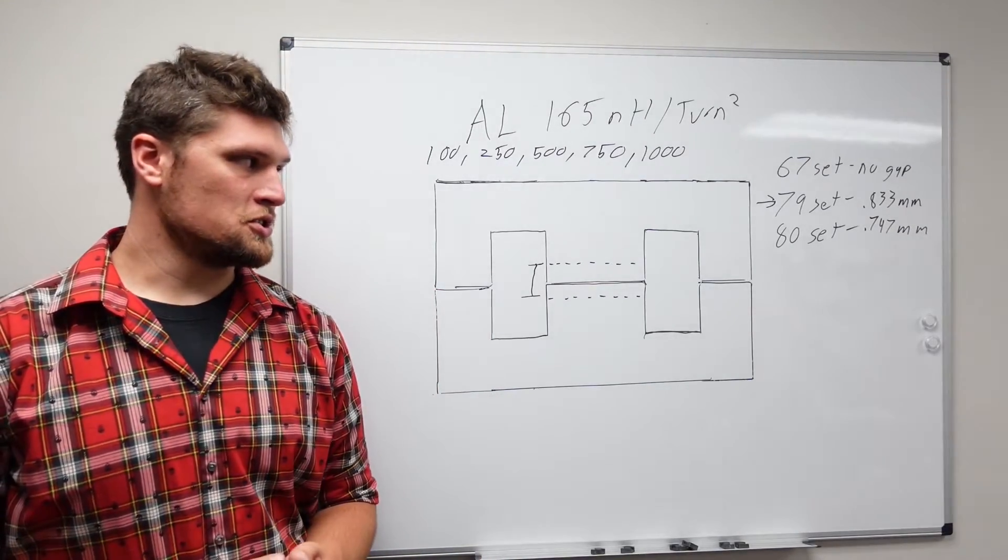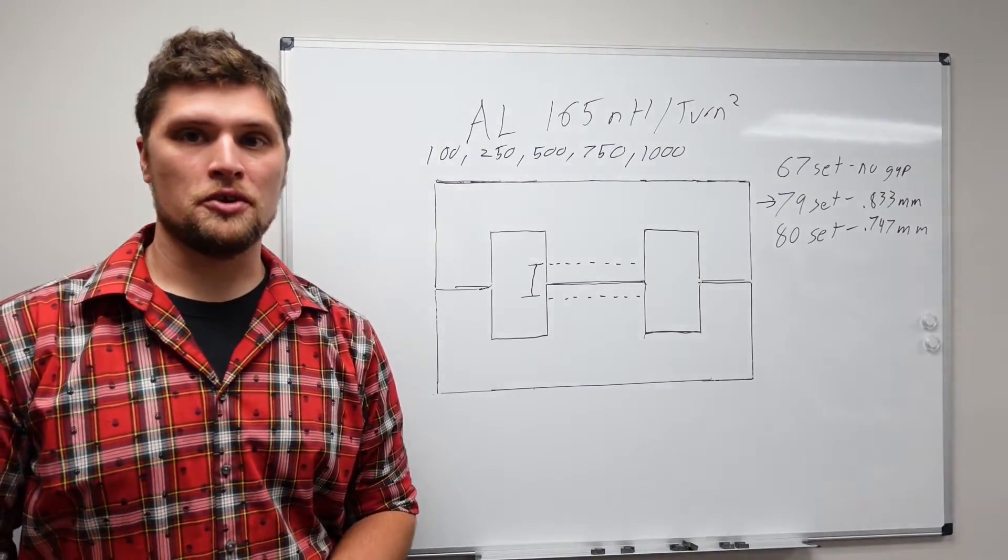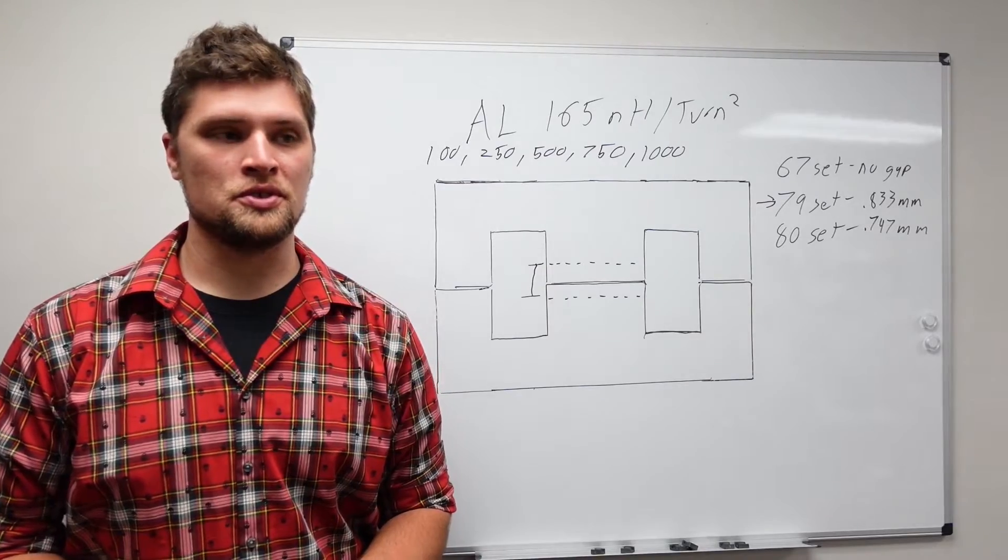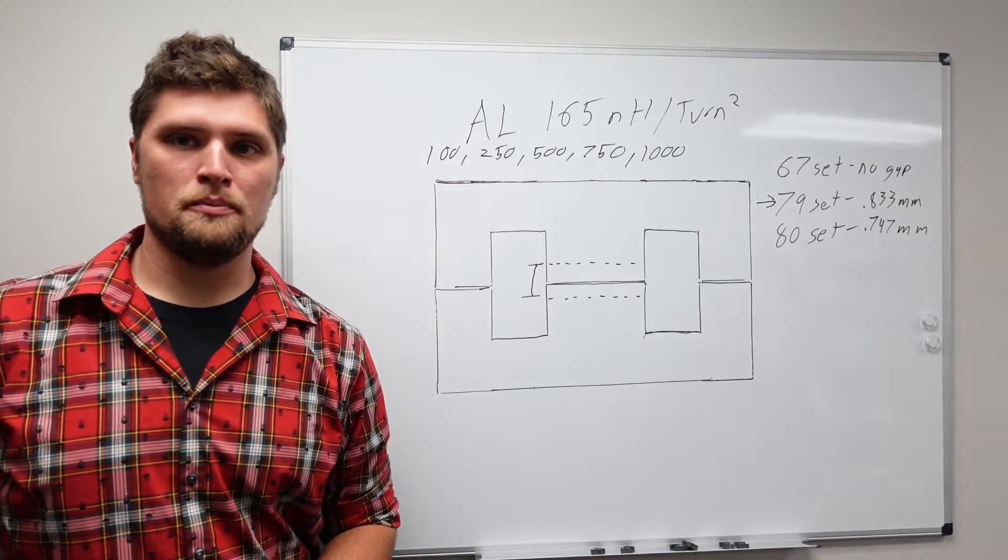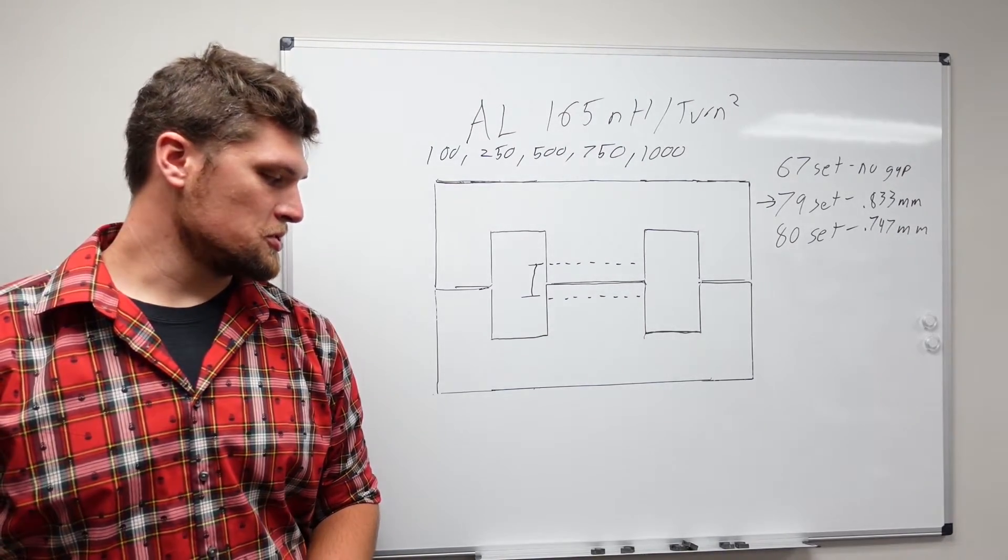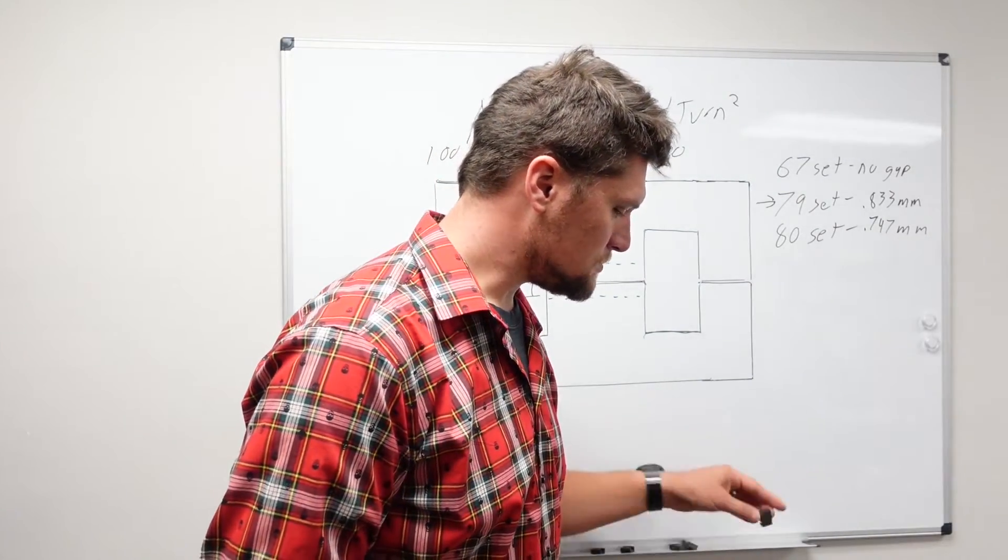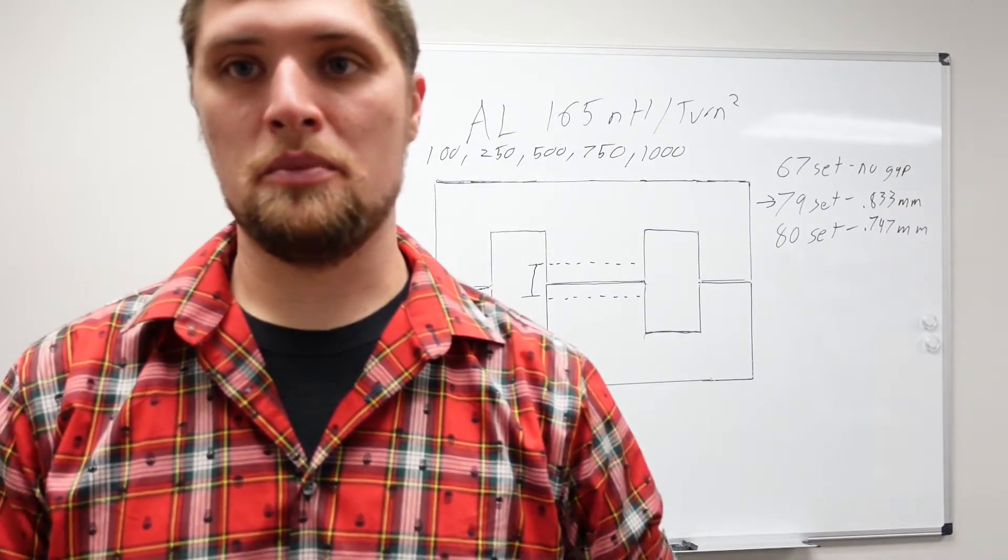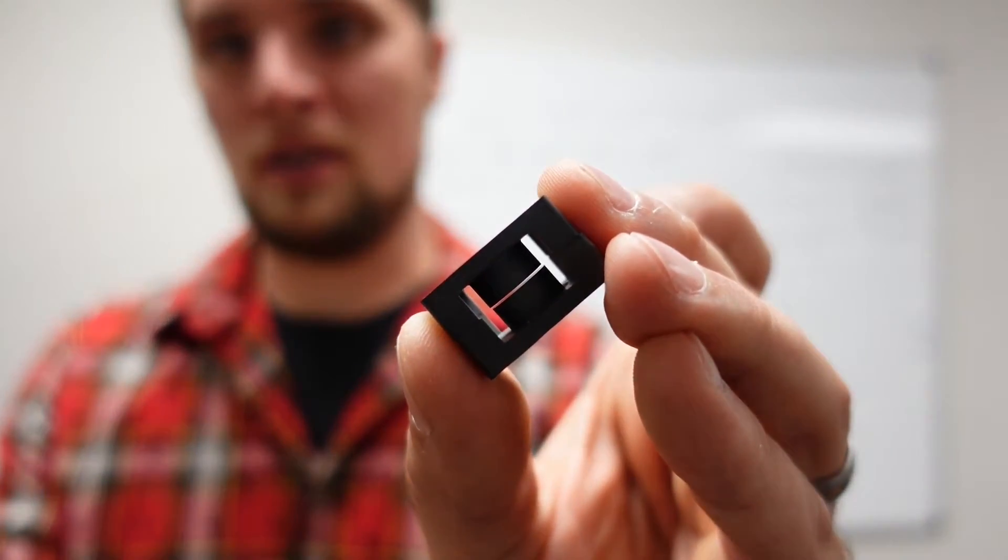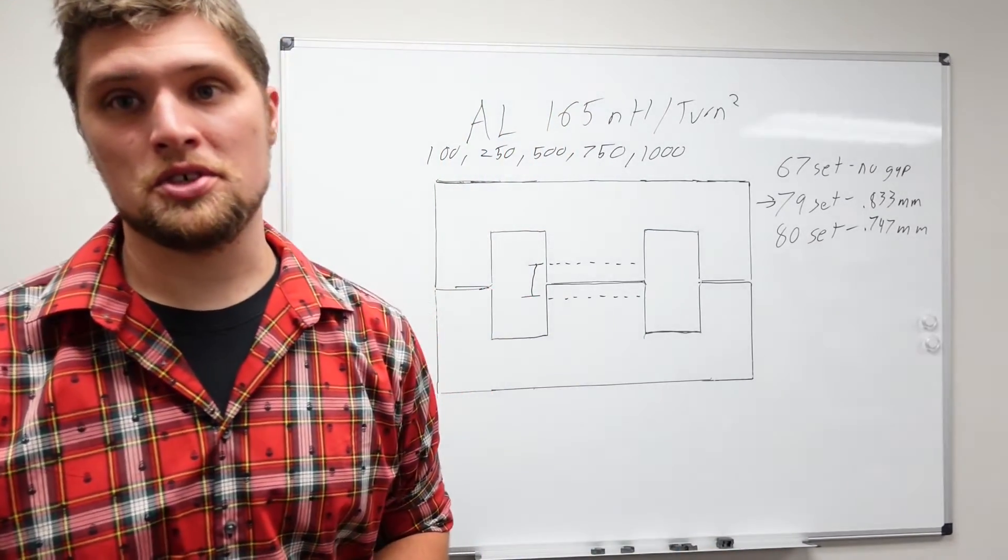So let's play around a little bit now and see if we can do a little bit better than the 67 core set. So we still have our three different cores and three same geometries and three different materials. And let's do a little bit of mixing and matching and see if we can get a little bit better performance. So we have our un-gapped 67 core set. If we take one of those halves and mixed it with a 79 or an 80 core, we'll wind up with a gap length somewhere between the two materials and a permeability material somewhere between the two materials.